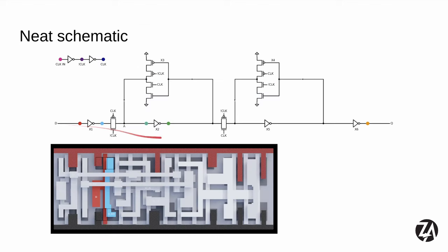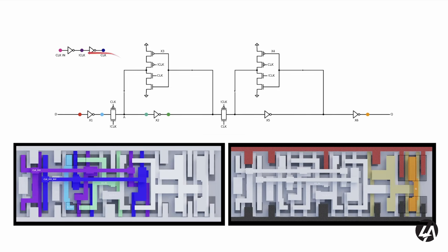I got some help from Propi on the course to make a neat schematic using the SchemDraw Python library, and Maximo did a cool render of it. We've got the positive supply, the negative supply, and the D input inverter. For the clock, we take the clock in and generate an inverted and a double-inverted clock, which are distributed to the transmission gates. On the output side we have a double-ganged inverter giving two times drive strength.